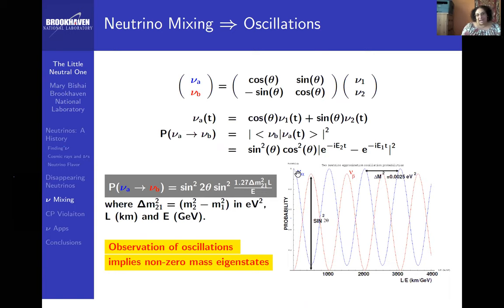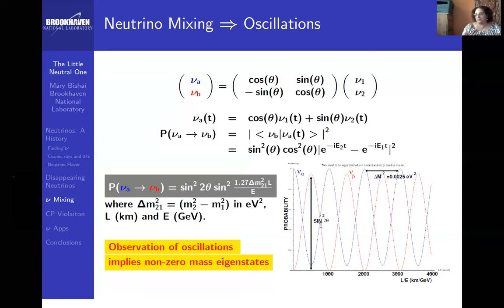If you draw this out, the probability that a state alpha survives as state alpha over distance L/E shows an oscillation with amplitude sin²(2θ) and a period determined by the mass-squared difference. Both the amplitude and the mass difference squared are things we have to determine experimentally. This is the formula that tells you how neutrino oscillations could happen if neutrinos are a mix of different mass states.